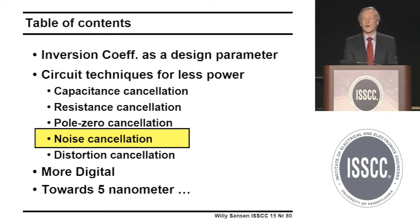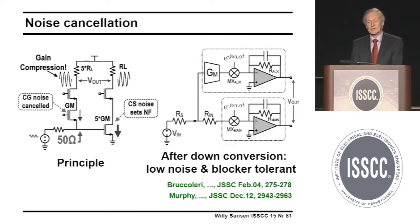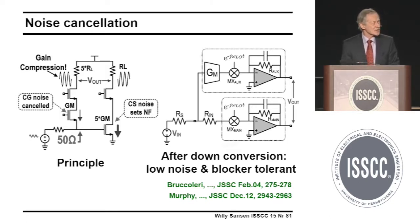Now the most difficult ones — noise. Noise is generated as a power; it doesn't know a direction. How can you cancel noise? One early paper at this conference showed that you can cancel transistor noise provided the noise takes two paths: one direct path and another path, cancelled at the differential output. You must be careful not to generate other noise sources. It can also be done after demodulation in a receiver, not only in continuous time.